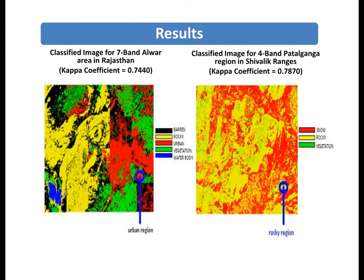These are the results obtained after applying the proposed biogeography and geosciences based feature extraction model on two different satellite image datasets. The first figure is the classified image after applying the proposed model on the seven-band Alva area in Rajasthan, which achieves a classification accuracy of 74.4 percent.